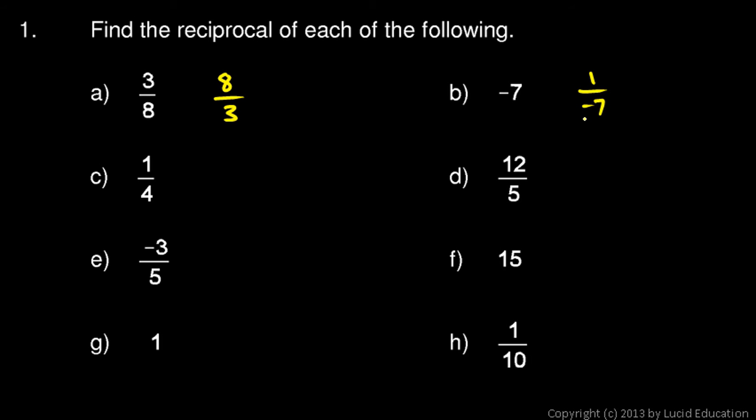But we don't typically leave fractions with the negative sign in the denominator, so let's write this as negative 1 over 7. The reciprocal of negative 7 is negative 1/7. The reciprocal of 1 over 4 is 4 over 1.